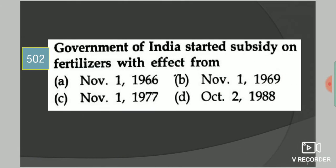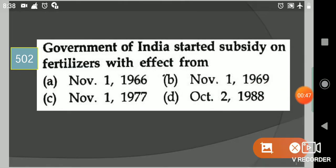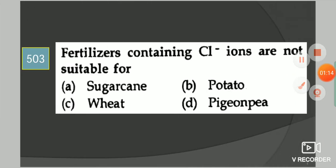Next question: Government of India started subsidy on fertilizers with effect from? Your options are 1966, 1969, 1977, October 2nd 1998. Your answer is option C, 1977.